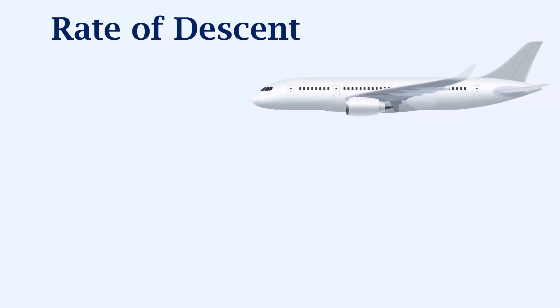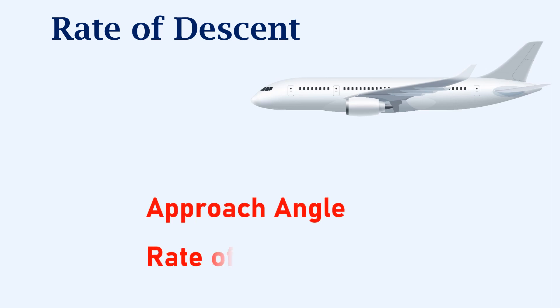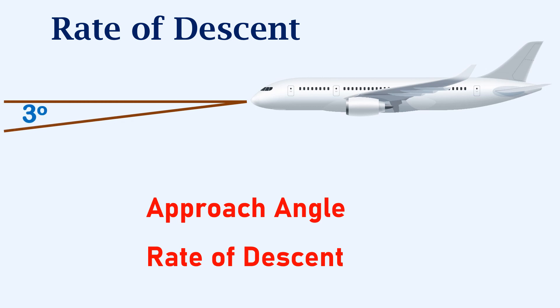The rate of descent. This is regarding the approach angle and the rate at which the aircraft is descending. Usually, the approach angle would be 3 degrees and the rate of descent would be between 600 to 700 feet per minute. The maximum rate of descent for a stabilized approach will never exceed 1000 feet per minute in all cases.